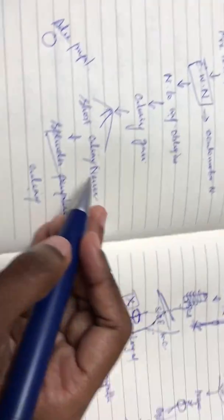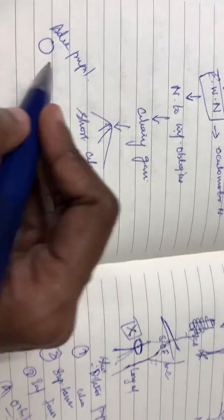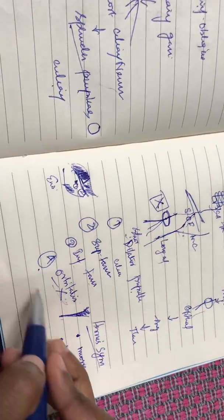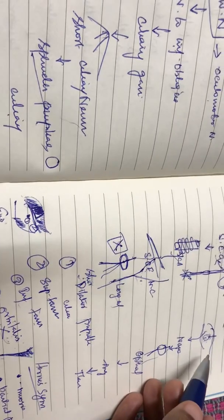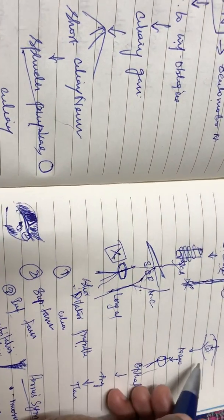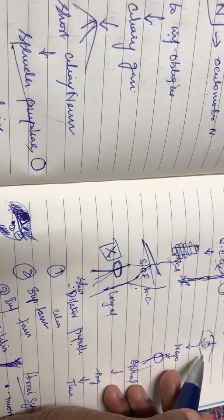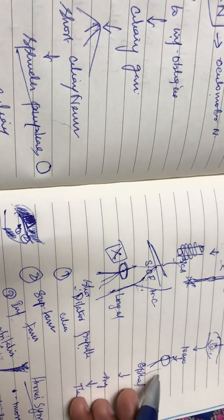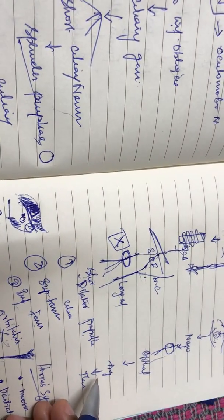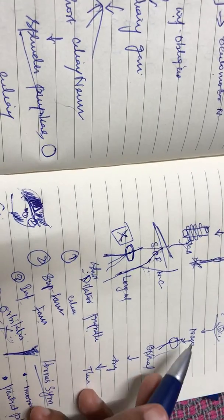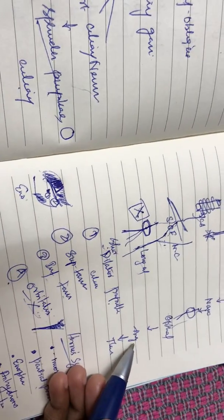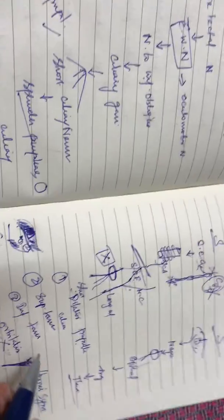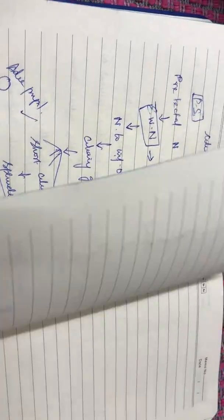In summary: for the parasympathetic clinical application, write Adie's pupil. For the sympathetic, write all four muscles with Horner's syndrome. For the sensory or nasociliary component, you can write the corneal reflex — if dust enters the eye, the sensation travels via the nasociliary, ophthalmic, trigeminal, and thalamus. This is the complete overview of the ciliary ganglion.